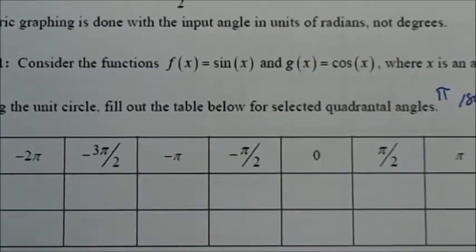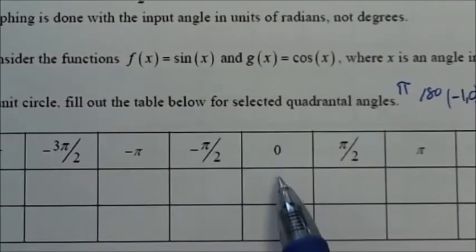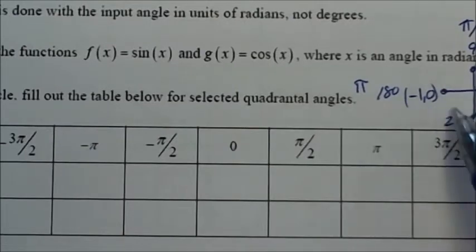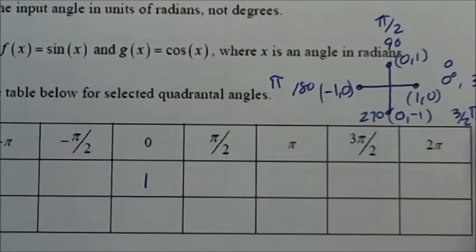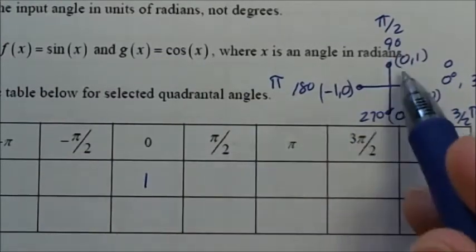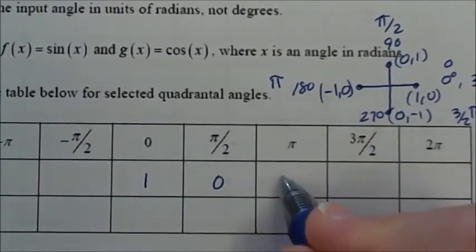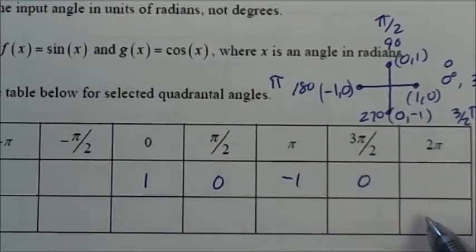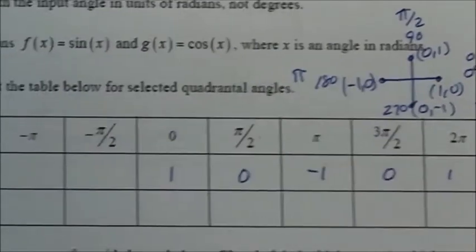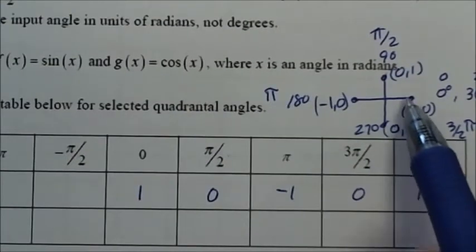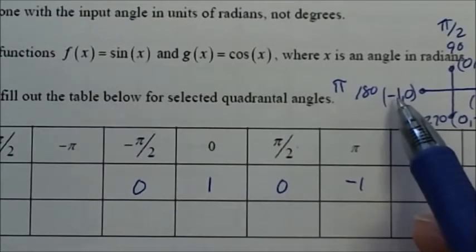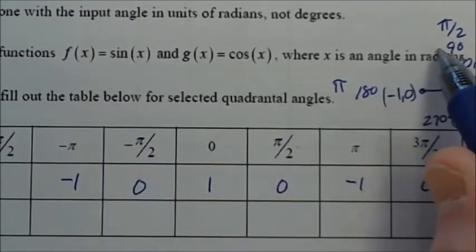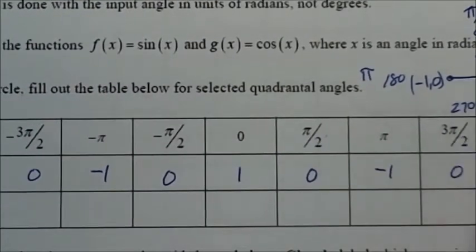Using blue pen, we'll fill in the chart for cosine. Cosine is the x-coordinate on the unit circle. So: cos(0) = 1, cos(π/2) = 0, cos(π) = −1, cos(3π/2) = 0, cos(2π) = 1. For the negatives, going clockwise: cos(−π/2) = 0, cos(−π) = −1, cos(−3π/2) = 0, cos(−2π) = 1.